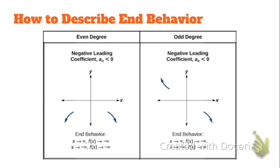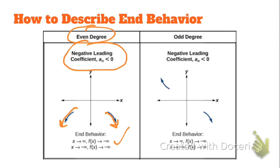The only other two examples would be if you had a negative leading coefficient — then the graph is going to fall to the right. And if the degree is even, it's going to go in the same direction, and that's how you write that end behavior — it's going down in both directions. So as x approaches infinity, f of x approaches negative infinity. Remember, f of x is just another way of saying y. And as x approaches negative infinity, f of x also approaches negative infinity.